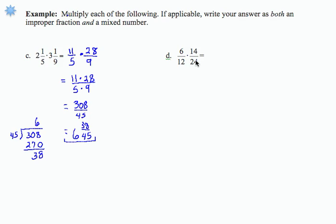Looking at the second problem, 6 twelfths times 14 twenty-fourths, what I'm going to do for each of these fractions separately before I multiply is I'm going to look for common factors. So the numerator of the first fraction is 6 times 1. The denominator is 6 times 2. I'm still multiplying those. The numerator of the second fraction is 2 times 7. The denominator of the second fraction is 2 times 12.